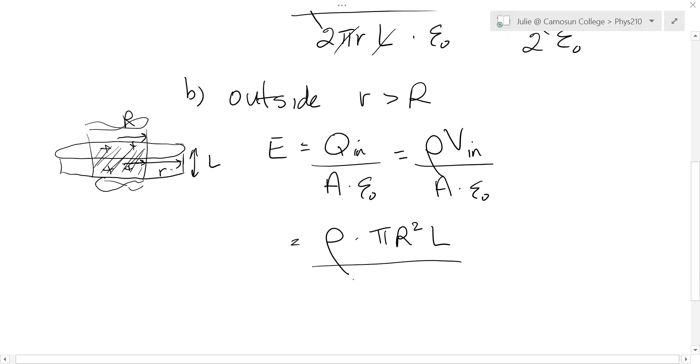But the area through which the electric field pierces, the electric field is still out here going through our Gaussian surface. And so for that, for the area, we use little r. So it's two pi little r L epsilon naught. So this expression is different. This becomes rho R squared over two little r epsilon naught.